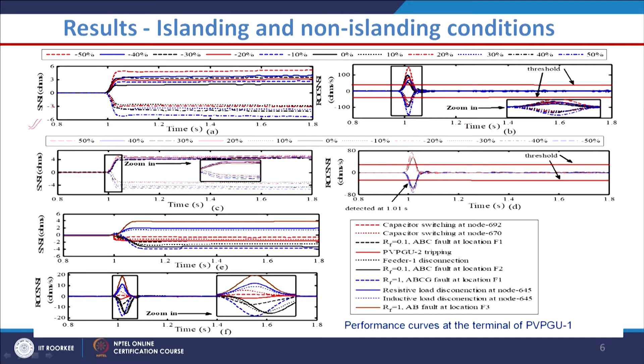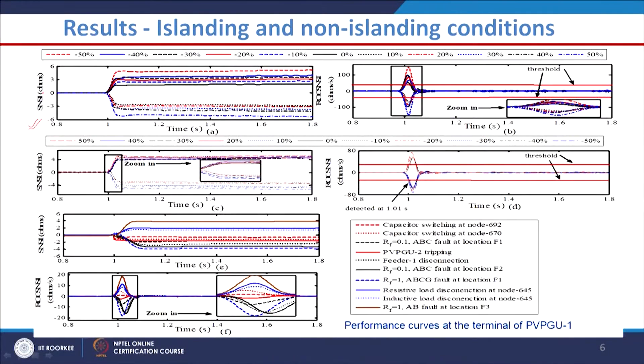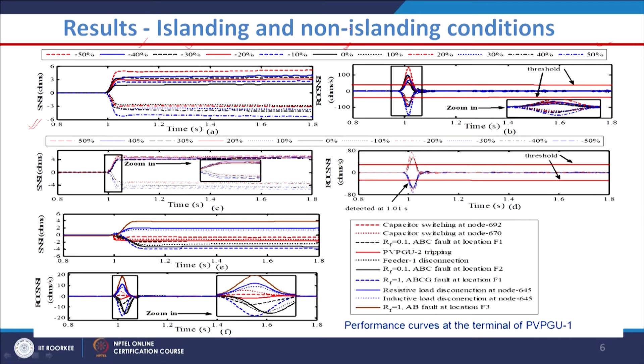Looking at the first figure, SNSI stands for superimposed negative sequence impedance. For different percentages of active power mismatch ranging from −50% to +50%, the variation of SNSI is shown. It is most desirable to test performance for lower power mismatch, especially zero power mismatch condition, and the technique works properly even at zero power mismatch.